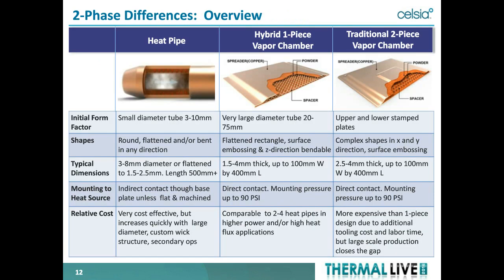What is the difference between heat pipes and vapor chambers? Heat pipes are round, generally available in 3 to 10 millimeter diameters — though for power electronics, 20 to 25 millimeter diameters are not unusual. Then there are two types of vapor chambers: a hybrid one-piece vapor chamber made from a large diameter tube, and a traditional two-piece vapor chamber where two stamped pieces have wick structure installed, then are sealed and welded around the periphery. Typical dimensions, mounting methods, and relative costs vary between these options.